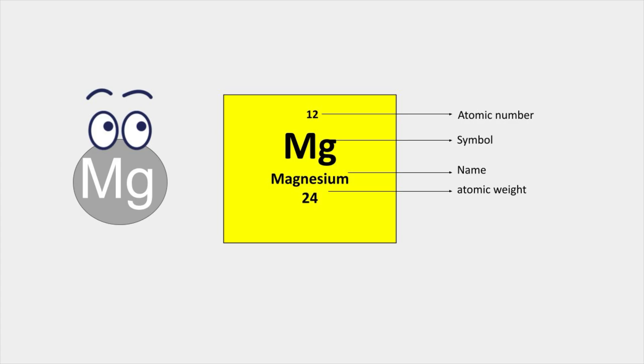To write the valency we should know the atomic number. Magnesium atomic number is 12, from that we can write the electronic configuration.